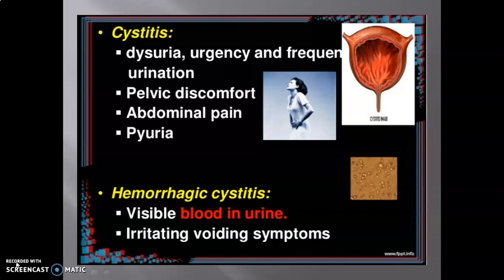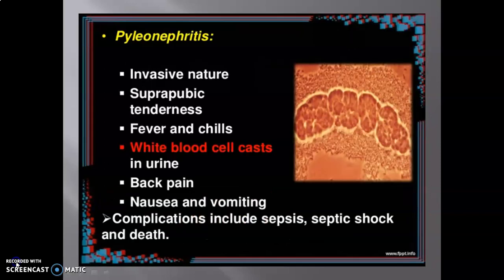Hemorrhagic cystitis presents with visible blood in urine and irritating voiding symptoms. Pyelonephritis has an invasive nature with suprapubic tenderness, fever and chills, white blood cells in urine, back pain, nausea, and vomiting. Complications of pyelonephritis include sepsis, septic shock, and death.